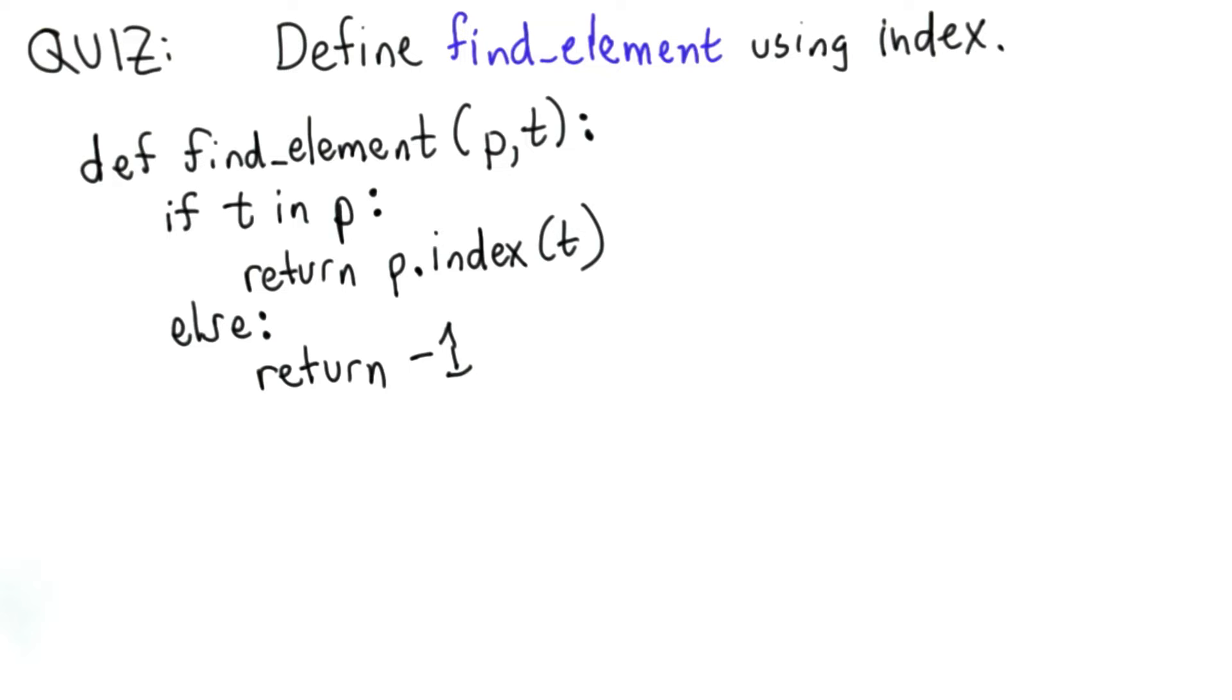So here's one way to define findElement using index. In the case where the element does exist in p, index gives us exactly the result we want.